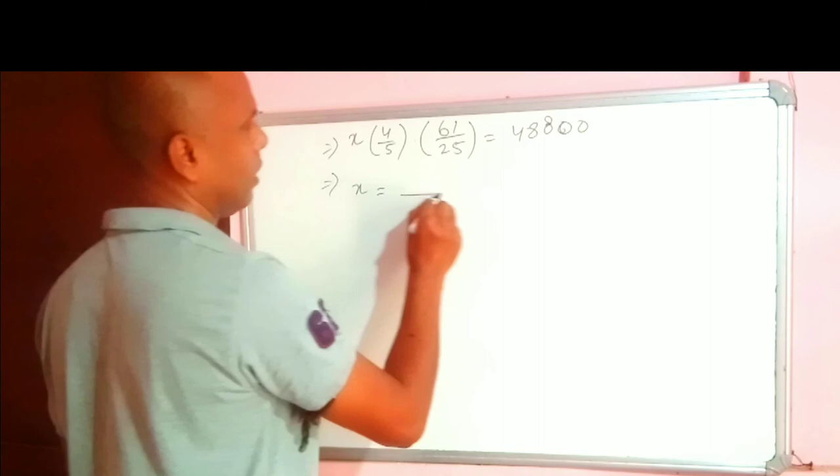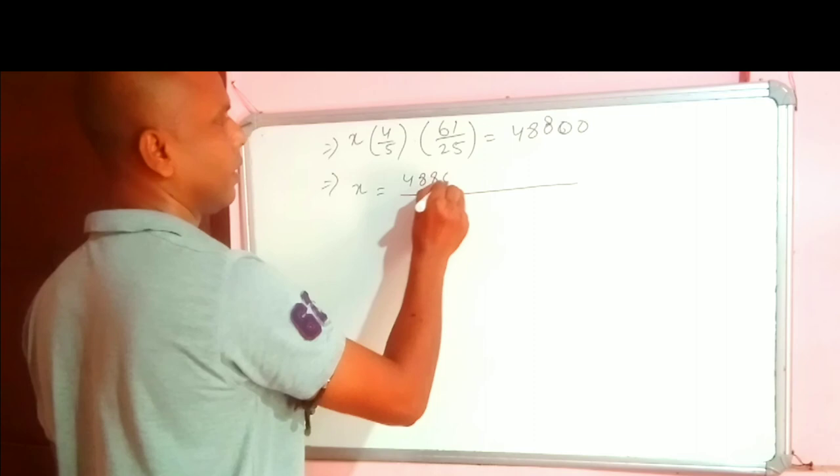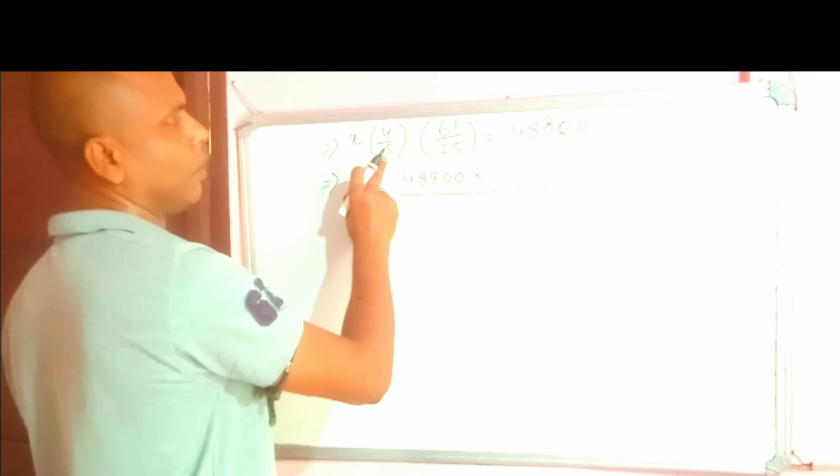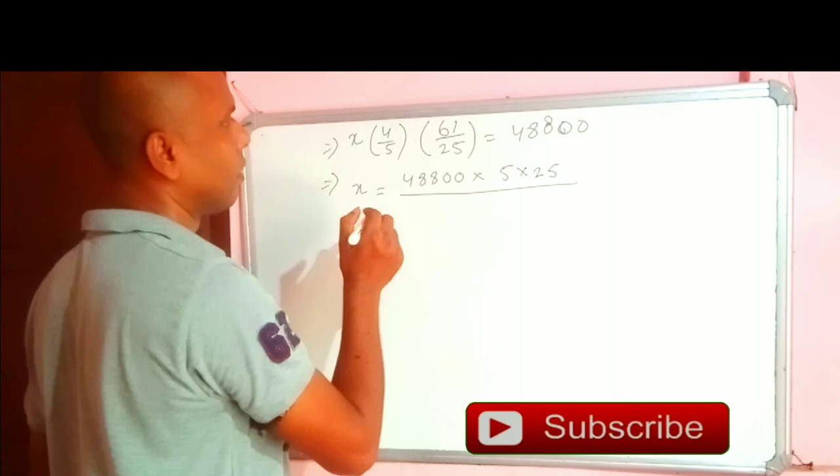Now we will change the side. X equal to, we have to write this one first. 48,800 into the part which is in the denominator will go up. 5 into 25. So the part in the numerator on the left hand side will go down side. 4 into 61.